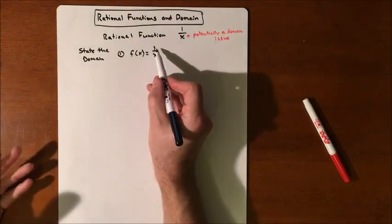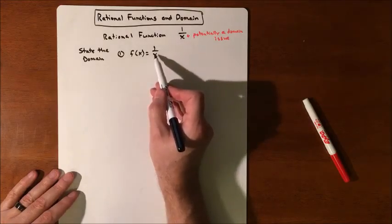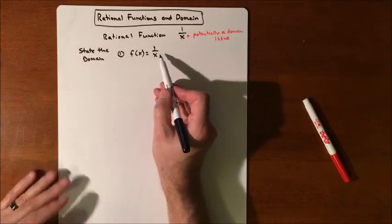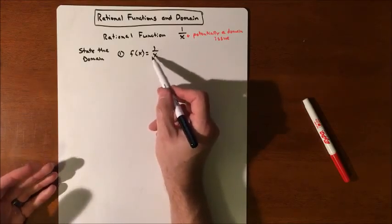And our domain is all of the X's that we can plug into an equation. So we want to know, can we plug in positive numbers? Can we plug in negative numbers? Can we plug in zeros, fractions, square roots, anything? That's what a domain is. What are the values that you can and cannot plug into this equation?